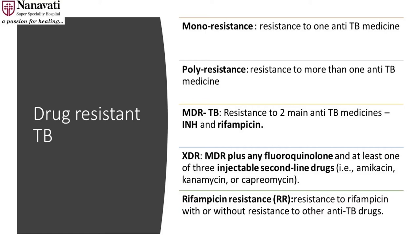XDR-TB is where you have MDR plus fluoroquinolone plus aminoglycoside resistance. We also talk nowadays about rifampicin resistance, which is what we detect on our GeneXpert. We assume that all patients who are rifampicin resistant would have additional INH resistance and then label these patients as MDR and start treatment on the basis of MDR-TB treatment.